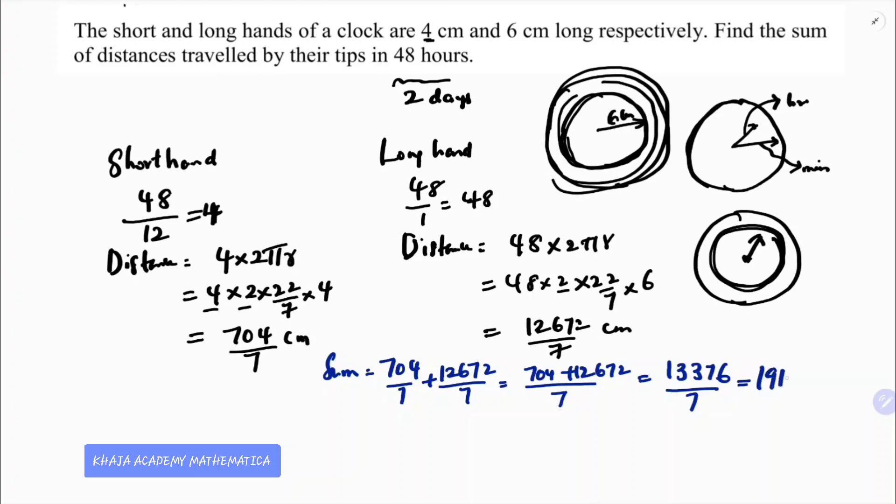This is the distance covered by short and long hands of a clock whose radius is 4 centimeters and 6 centimeters respectively.